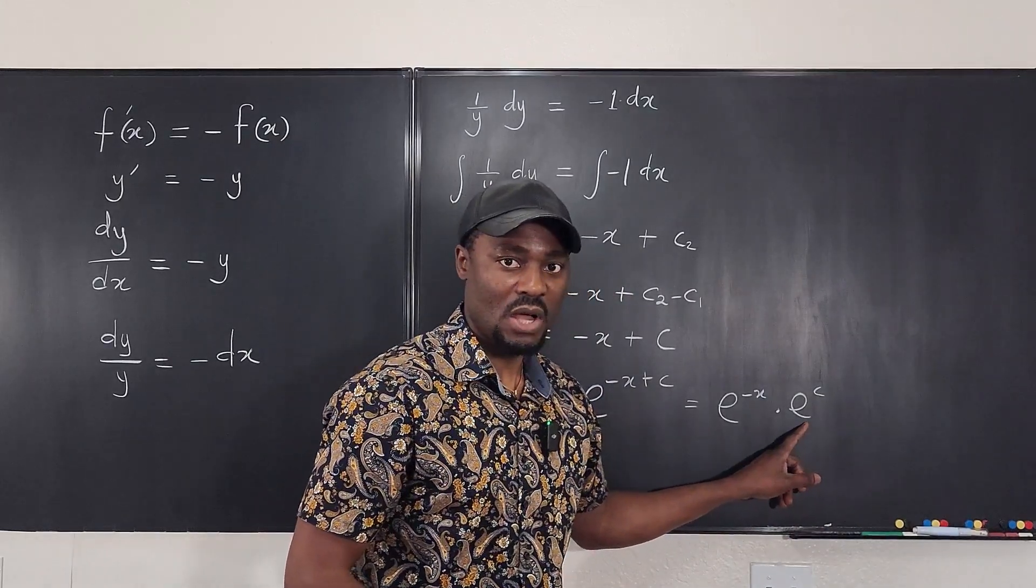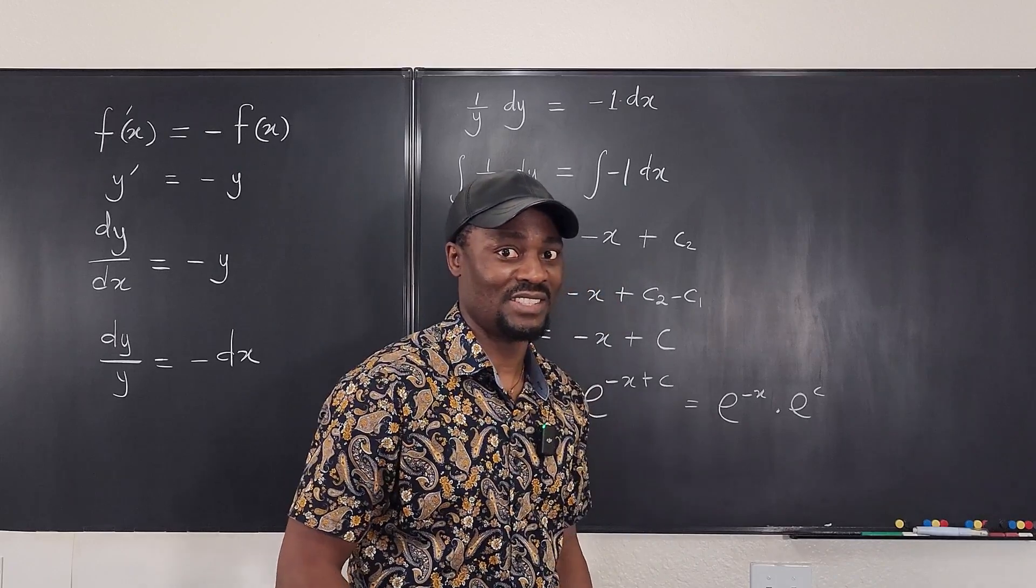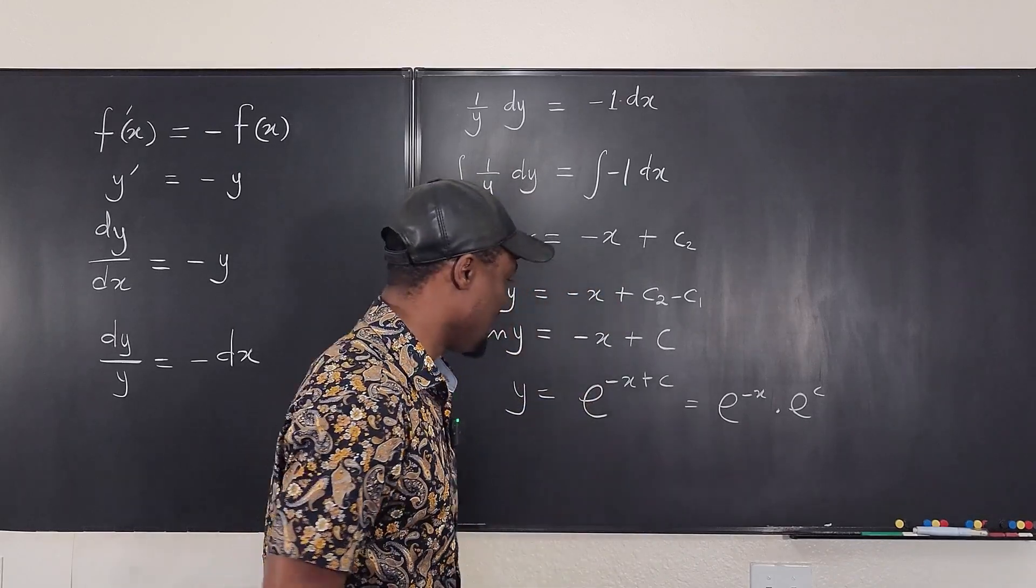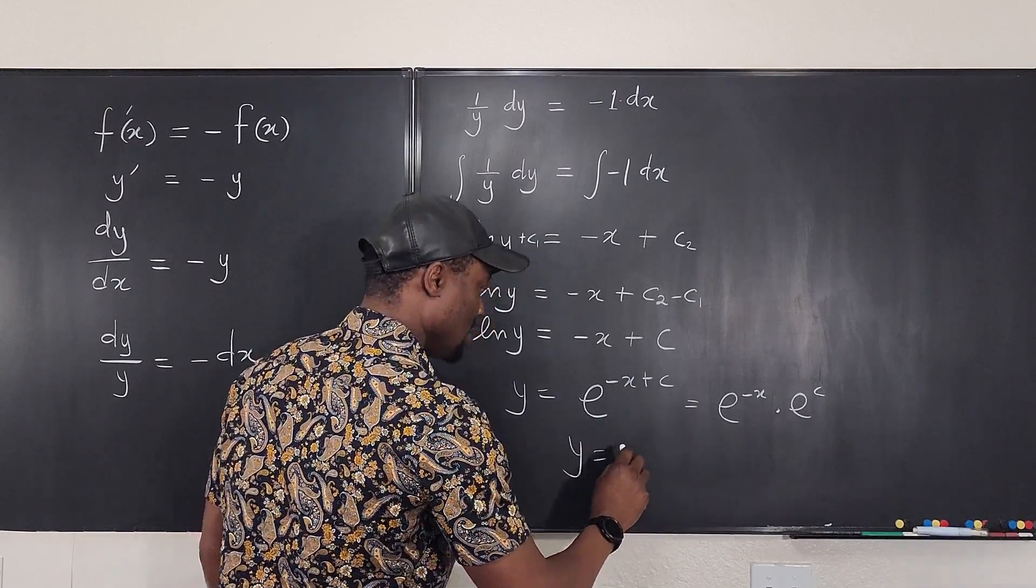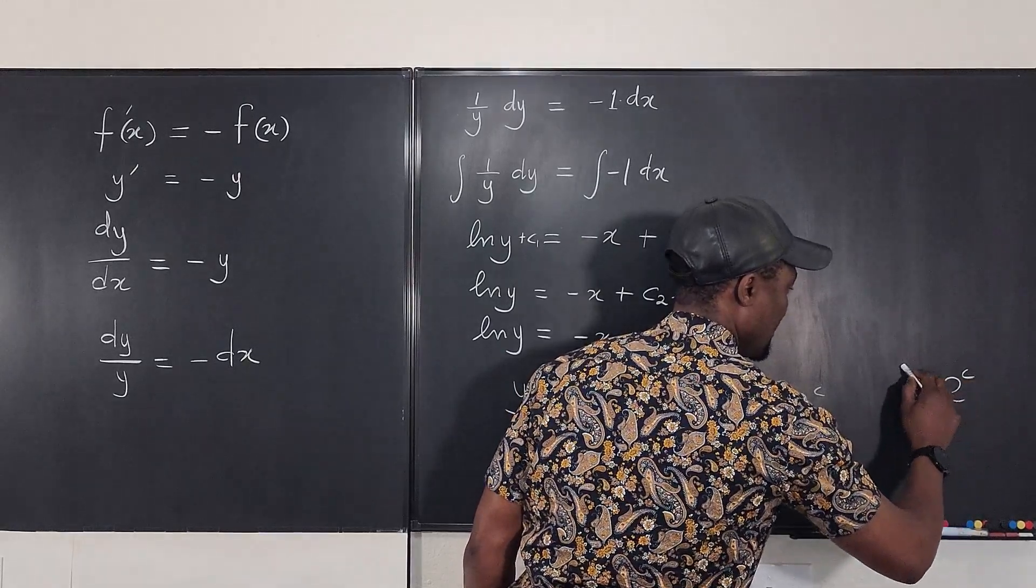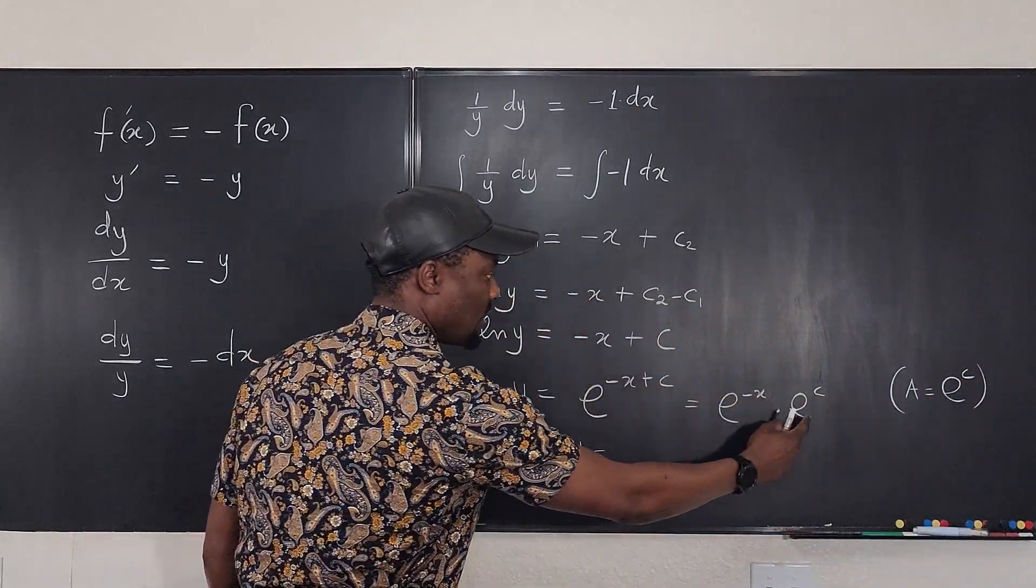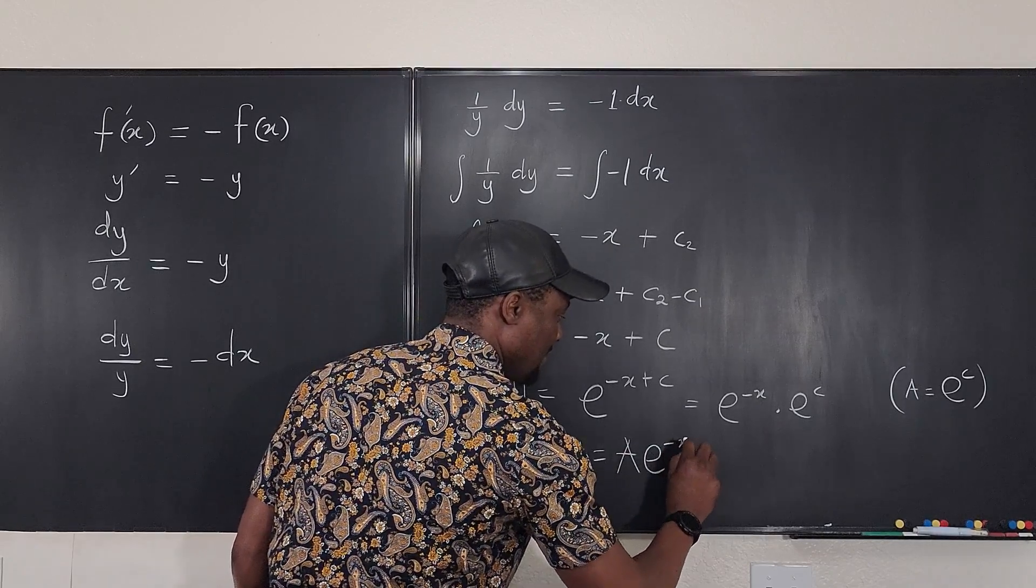But e is a number, is a constant. C is a constant. So, that's another constant. That's another giant c. But I don't want to use c. Let's use a to represent this. So, I can just say y is equal to a be equal to e to the c. Okay, so I can just multiply this by a. I get a e to the negative x.